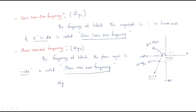So one is the gain crossover frequency and another one is the phase crossover frequency. These two frequencies decide the stability of the system. These are very, very important to understand the stability of the system.